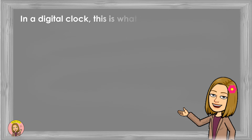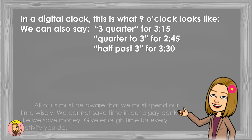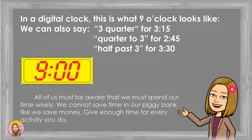In a digital clock, this is what 9 o'clock looks like. We can also say 'quarter past 3' for 3:15, 'quarter to 3' for 2:45, and 'half past 3' for 3:30.